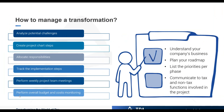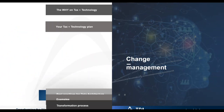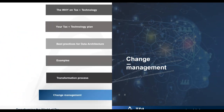In the next section we talk about how to manage a transformation process. As with any transformation project, not just technology projects, you need a clear plan. Before implementing any transformation project, first understand your company's business, plan your roadmap, and list priorities per phase, since you may have a limited budget. It's also very important to communicate to both the tax and non-tax functions involved in the project.